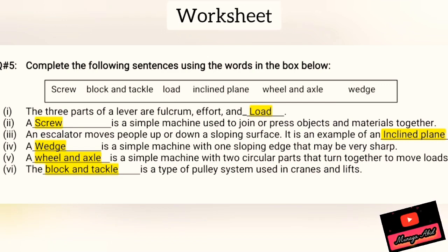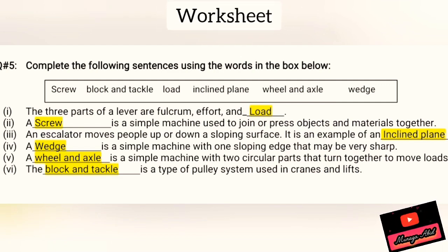Now we have to solve question number five. The word bank is there with the words — you have to put the suitable words in the blanks. Number one: the three parts of a lever are fulcrum, effort, and load. Second: a screw is a simple machine used to join or press objects and materials together. Third: an escalator moves people up or down a sloping surface — it's an example of an inclined plane.